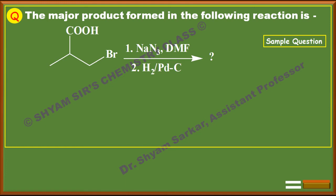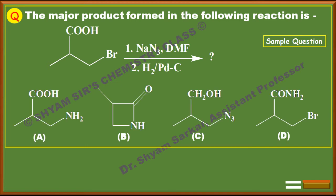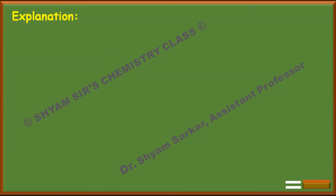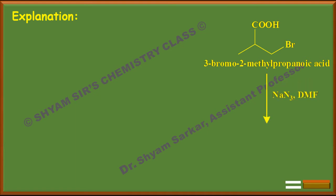Now I will show another problem, somewhat similar to the first. The question asks for the major product formed in the following reaction. The substrate is 3-bromo-2-methylpropanoic acid, treated with sodium azide (NaN3) in the presence of DMF as solvent.